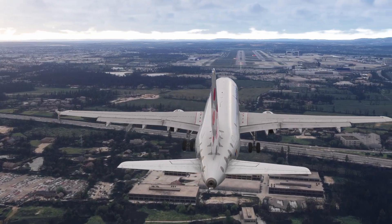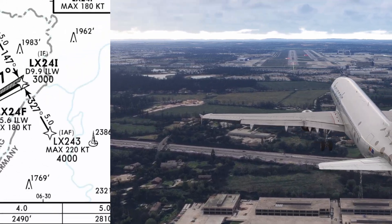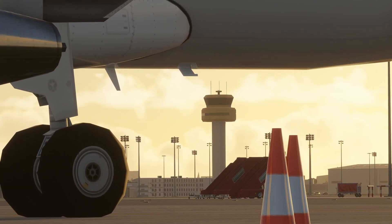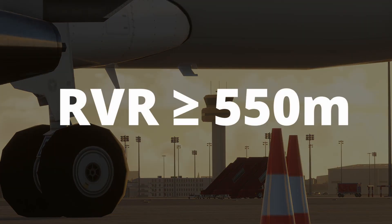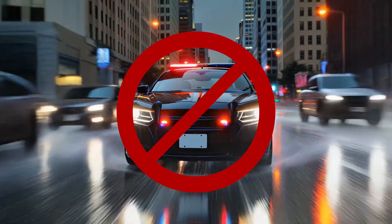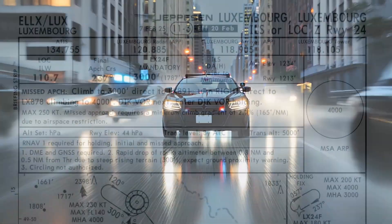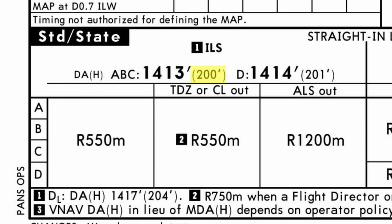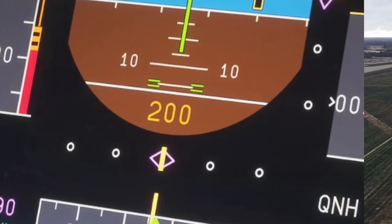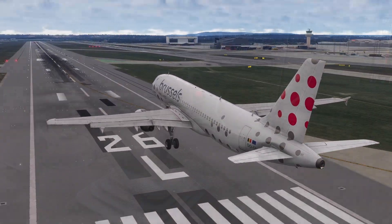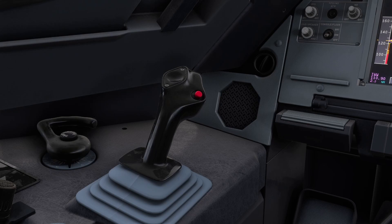We'll start with the most limiting of the ILS categories: CAT 1. A CAT 1 approach needs a minimum runway visual range of 550 meters, so you must ensure that the airport reports an RVR at or greater than 550 meters to keep it legal. CAT 1 approaches also have a decision height of 200 feet — once you reach 200 feet above the ground, you need to see the runway or go around. CAT 1 approaches are usually flown manually, so pilots disconnect the autopilot before minimums.